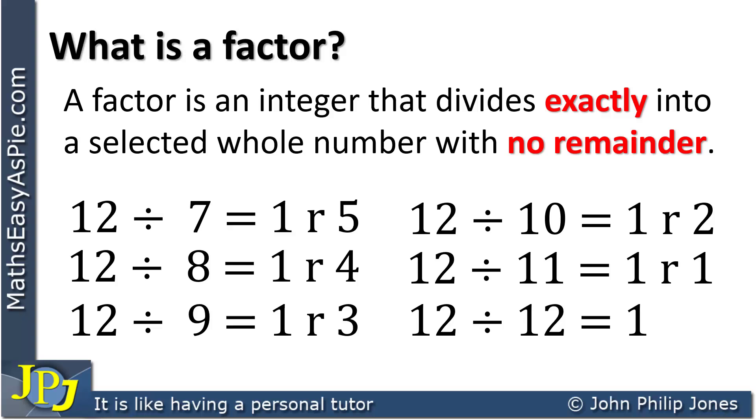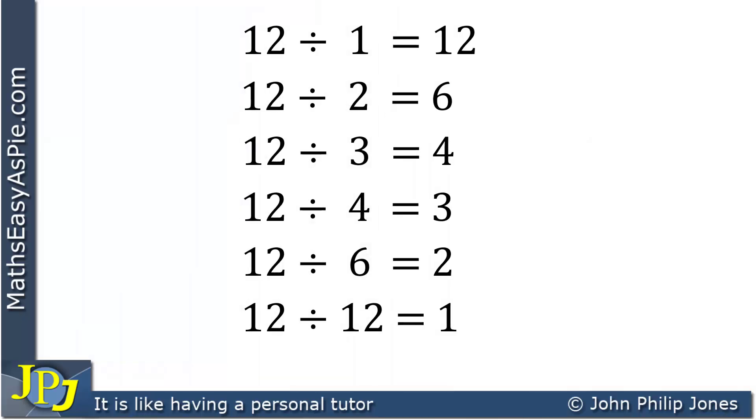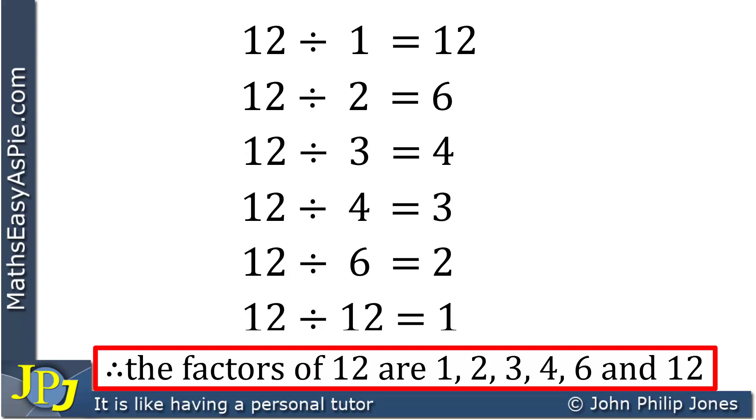So considering all the divisions we've done, I'm going to extract all the ones that went exactly and we can see those on this slide. Consequently the factors are 1, 2, 3, 4, 6 and 12. Therefore the factors of 12 are 1, 2, 3, 4, 6 and 12.